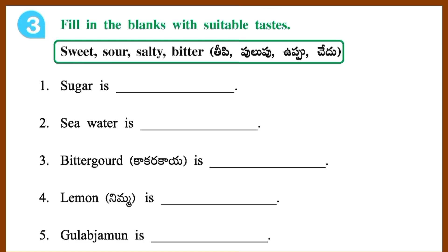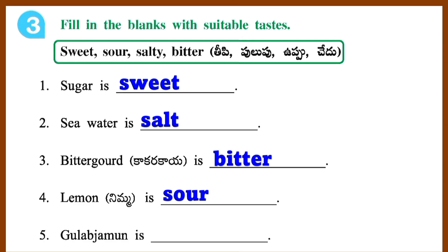Section 3: Fill in the blanks with suitable tastes. 1. Sugar is sweet. 2. Seawater is salty. 3. Bitter gourd is bitter. 4. Lemon is sour. 5. Gulab jamun is sweet.